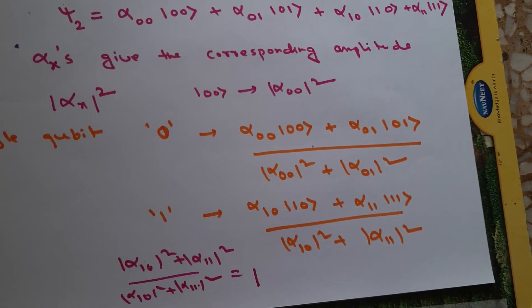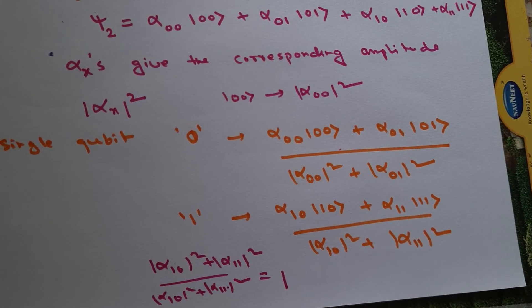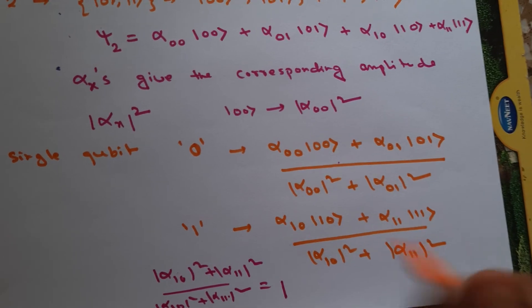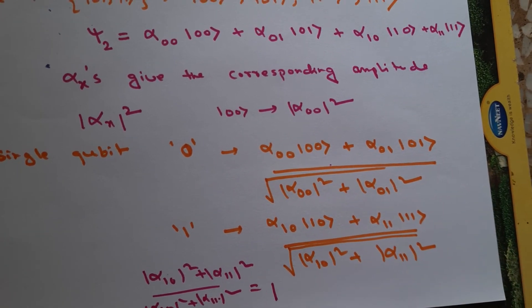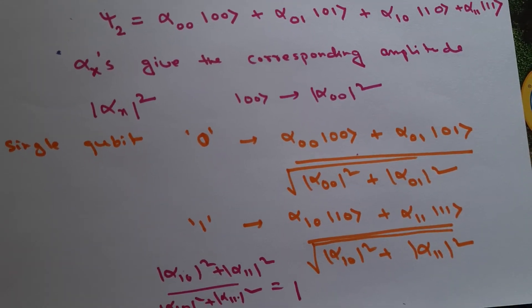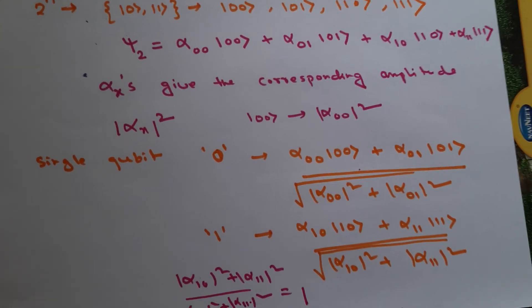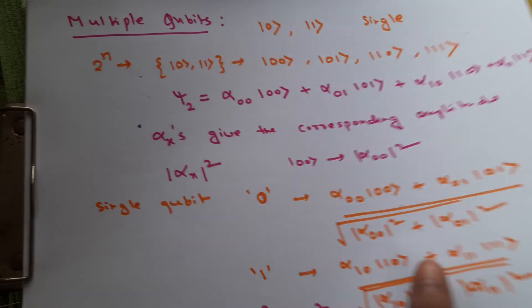That expression under the root equals 1, so it is normalized correctly. This is how you represent a two-qubit state, and we can extend this approach to an n-qubit state as well.